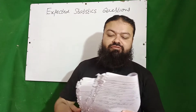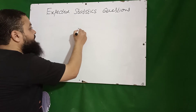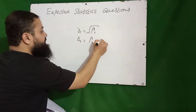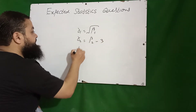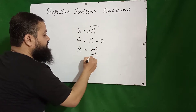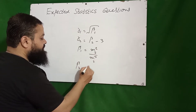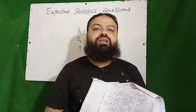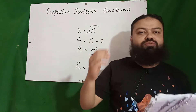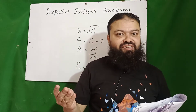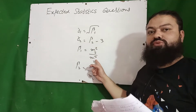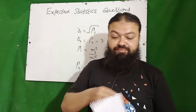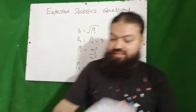Question number one: which one is correct? We know gamma one is equal to under root beta one; gamma two is equal to beta two minus three; beta one is equal to m3 squared over m2 cubed; and beta two is equal to m4 over m2 squared. All of these are correct. A very important one.